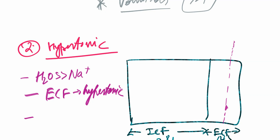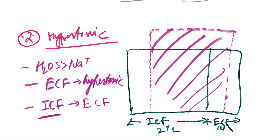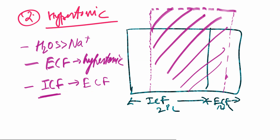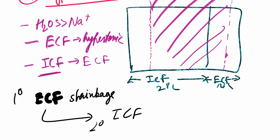As the extracellular fluid compartment becomes hypertonic, there is subsequently a gradient-driven water movement from the intracellular fluid to the extracellular fluid. Subsequently, there is shrinkage of the intracellular fluid compartment as well, and the tonicity of the intracellular fluid compartment rises. To summarize hypertonic dehydration: there is primary extracellular fluid compartment shrinkage, and secondarily intracellular fluid compartment shrinkage due to net movement of water from ICF to ECF. Tonicity rises because there is more water loss than sodium.